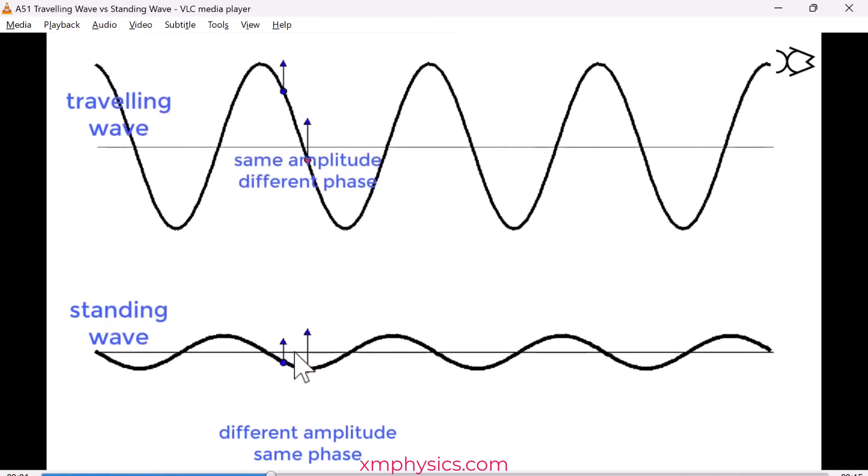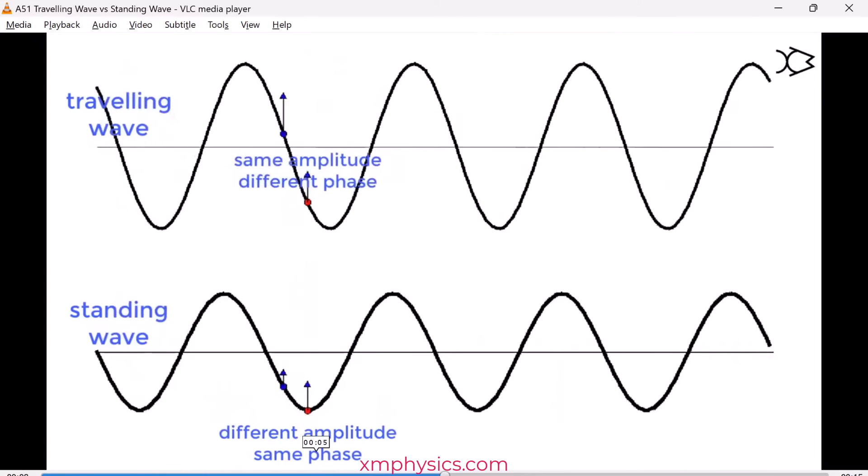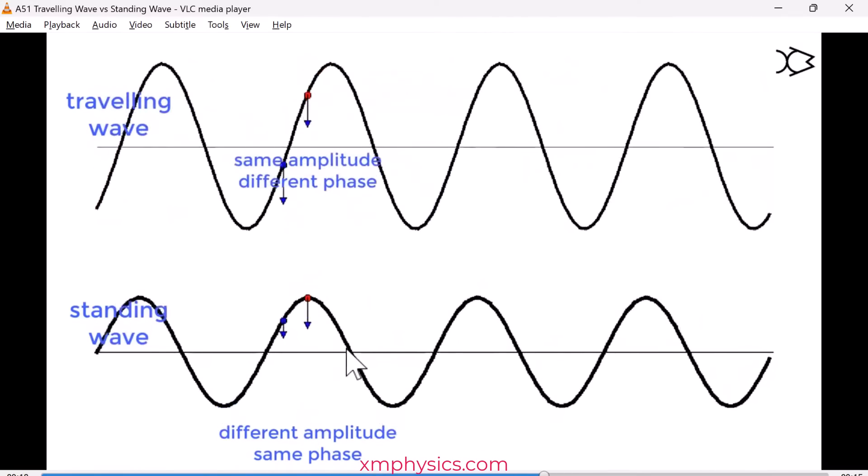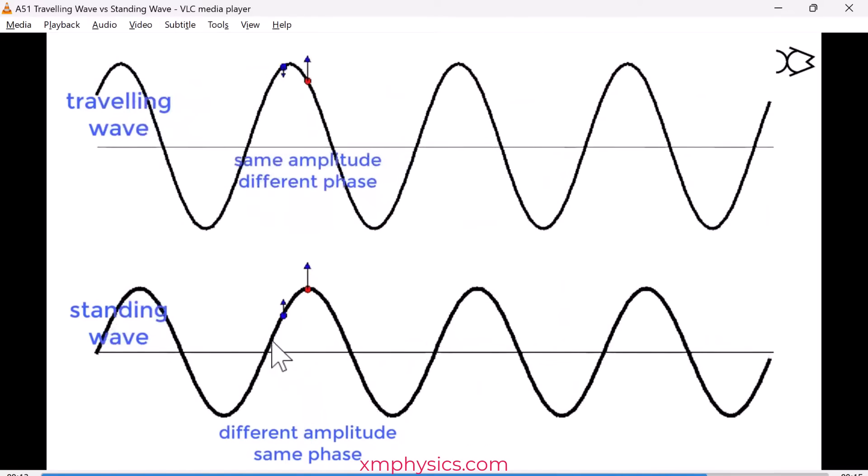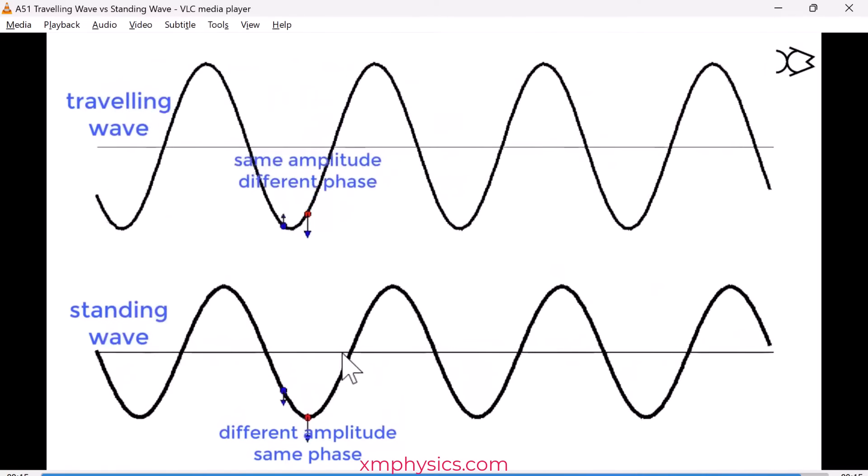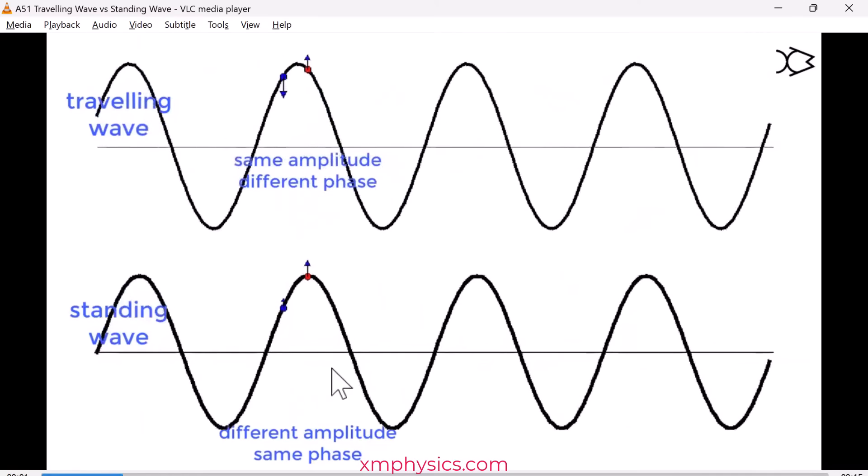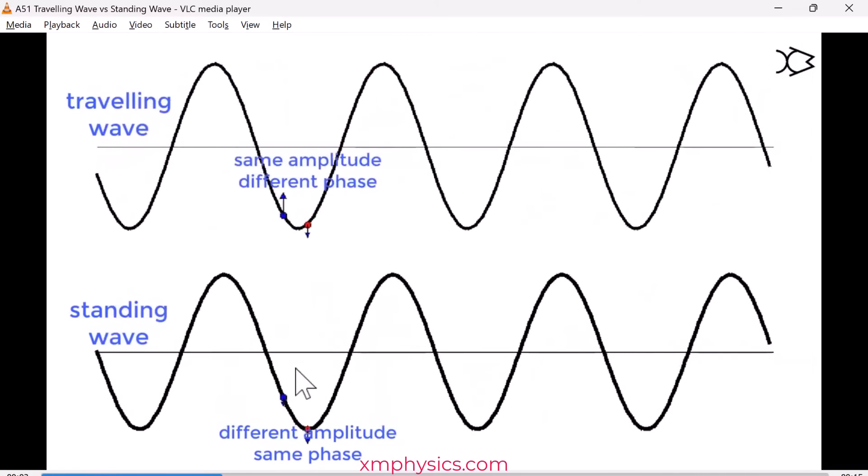It's just that they're doing it with a different amplitude. So for a standing wave, all the oscillations in the same loop, this is what we call a loop, is the segment between two nodes. So all the oscillations in the same loop are completely in phase.